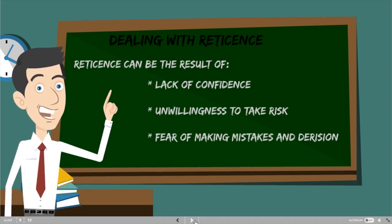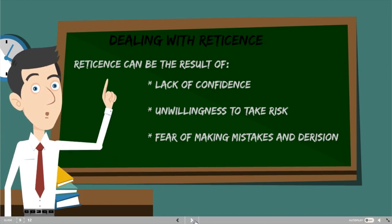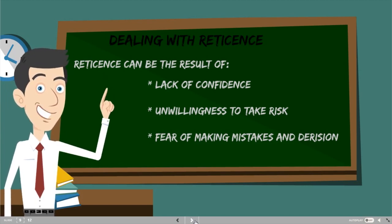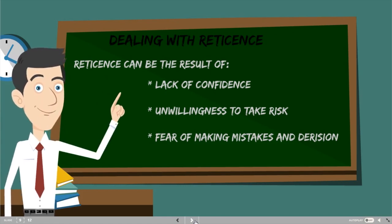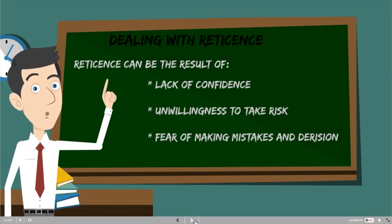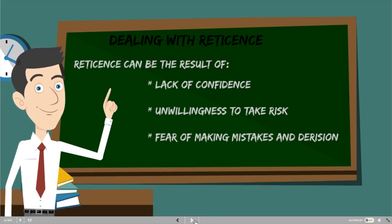The second reason for reticence is an unwillingness to take risks. Some students, even if they know the right answer, wouldn't raise their hands because they are afraid to be wrong. There is a fear of making mistakes and judgment from the teacher or other students, which is why they prefer not to talk at all.